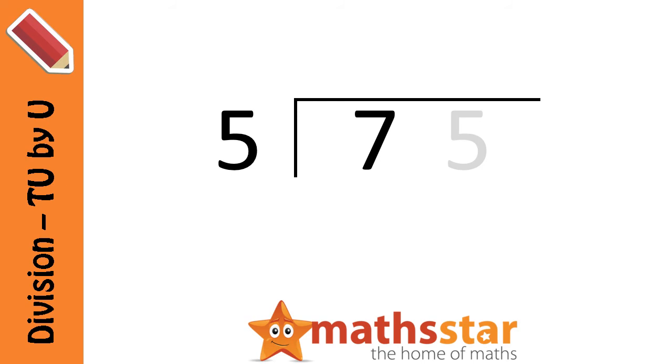So 7 divided by 5 is 1 with a remainder of 2. We put the 1 above the 7. And our remainder of 2 is really two tens, which is 20. And we add that onto the 5 to make 25.